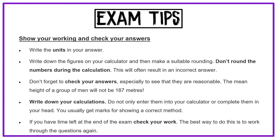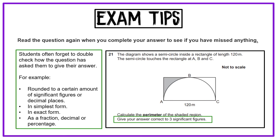Finally, if you have time left at the end of the exam, check your work — the best way is to work through the questions again from the start. Another important tip is to read the question again when you complete your answer to see if you've missed anything. Students often forget to double-check how the question has asked them to give their answer — for example, rounded to a certain number of significant figures or decimal places, in simplest form, in exact form, or as a fraction, decimal, or percentage. If the question asks for three significant figures, make sure you give exactly that, or you will lose a mark.